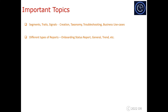The second topic is reporting. There are different types of reports — the three most important ones are the general report, trend report, and onboarding status report. There are more reports and you will get questions on those as well, but these are the key ones. Do note that topics like unique trait realization, total segment population, and total trait population need to be understood very carefully, as you will be tested on questions around these topics.